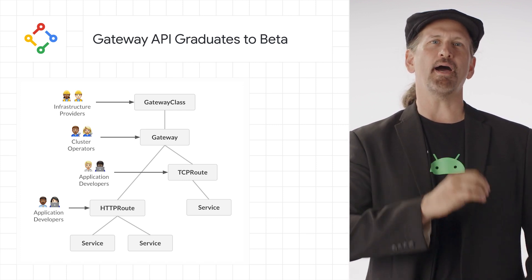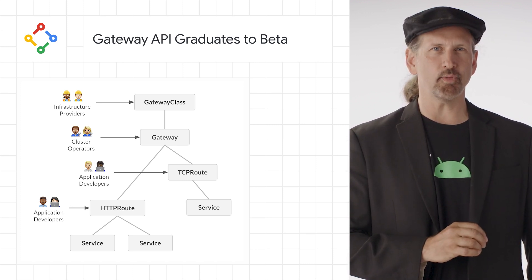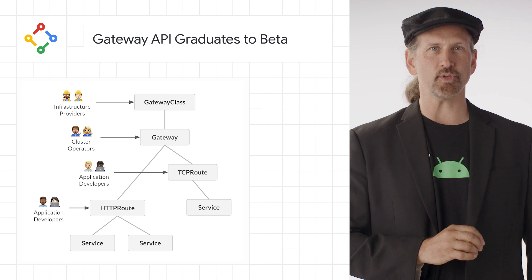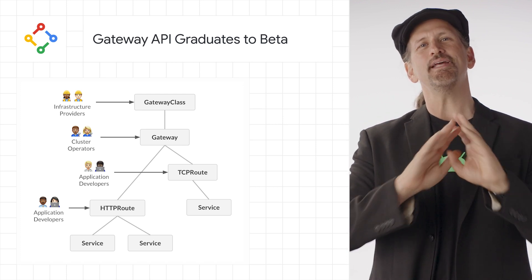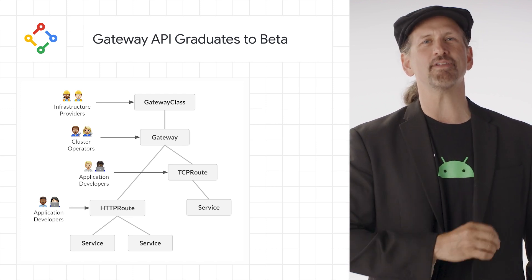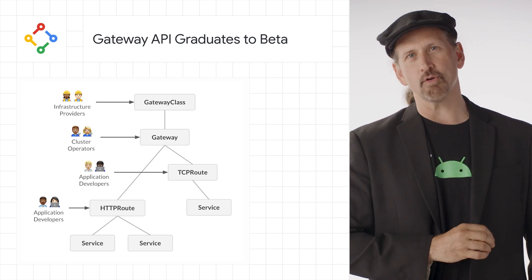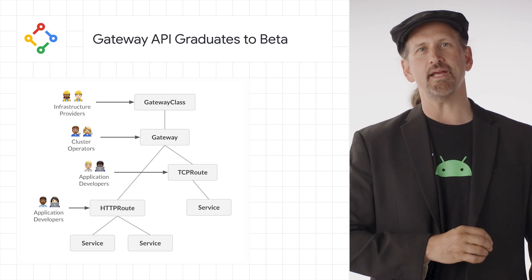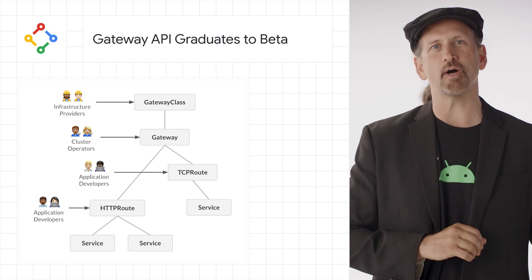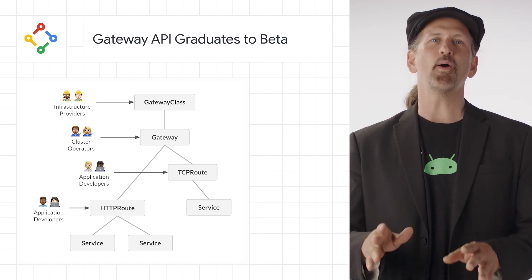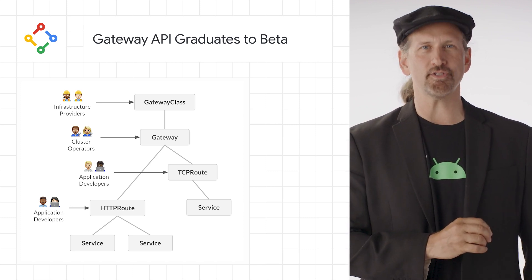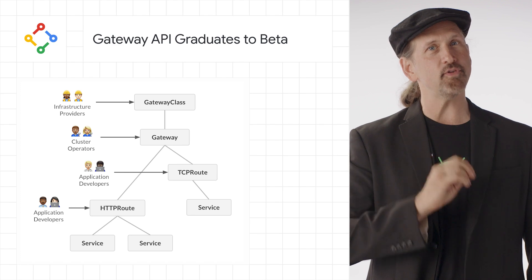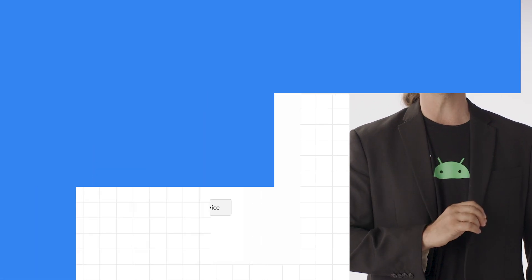Because this API is built with custom resource definitions, or CRDs, it can be installed in any Kubernetes cluster newer than version 1.16, which was released almost three years ago. The link below has lots more information, including how to get started and a preview of what's to come.